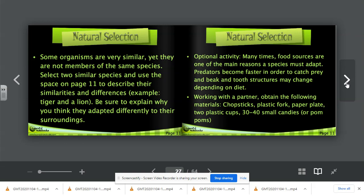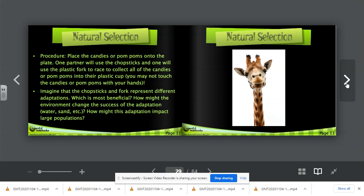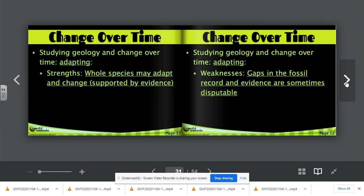Some organisms are very similar, yet they are not members of the same species. Select two similar species and use the space on page eleven to describe their similarities and differences. So for example, a tiger and a lion. Be sure to explain why you think they adapted differently to their surroundings. An optional activity: many times food sources are one of the main reasons a species must adapt. Predators become faster in order to catch prey and beak and tooth structures may change depending on diet. We will be doing this together in class, allowing you to firsthand see how beak and tooth structures can inhibit or enable an organism to obtain food. We will probably be doing this on Friday, November 13th, but for now just go ahead and read over these pages. Again, look at this giraffe. When we think of Lamarck, the giraffe is kind of the symbol for Lamarck and his theory that species could adapt and change during their own lifetime.